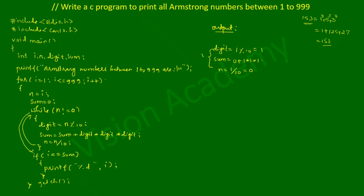Control now checks: if(i == sum). i is 1 and sum is 1, so the condition is true. Therefore 1 is printed as an Armstrong number. Control then transfers back to the outer for loop, incrementing i by 1.